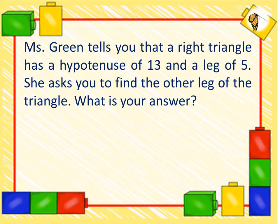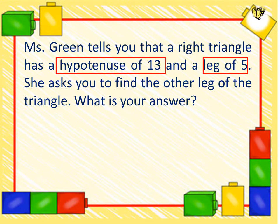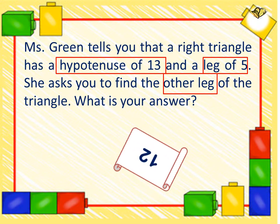Another problem. Miss Green tells you that a right triangle has a hypotenuse of 13 and a leg of 5. She asks you to find the other leg of the triangle. What is your answer? Hypotenuse is 13 and the leg is 5. Find the other leg, so it's either A or B. We use the formula a² = c² - b². What is your answer? The answer is 12. That is the answer.